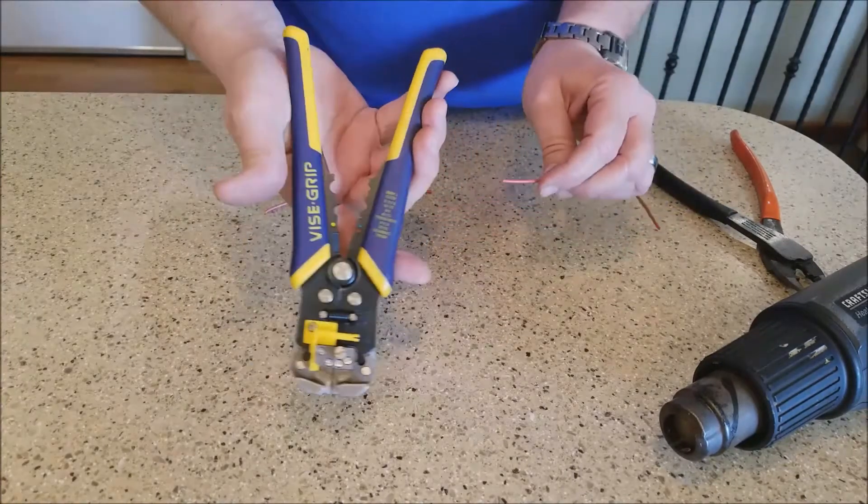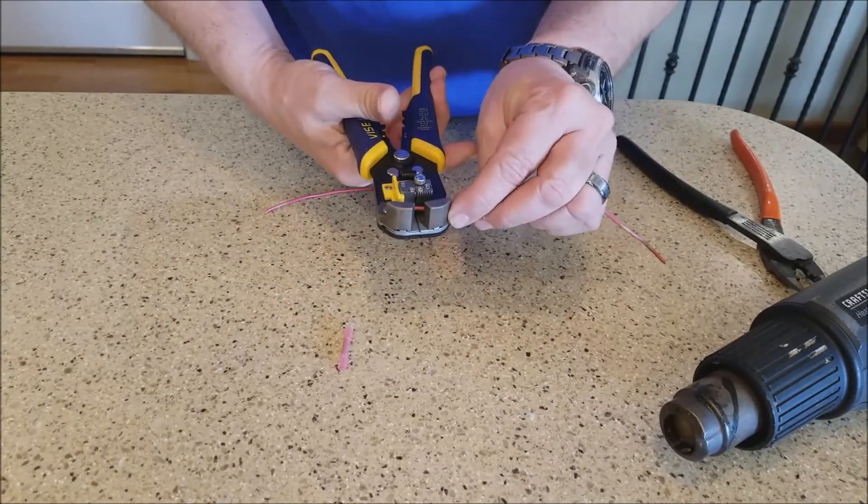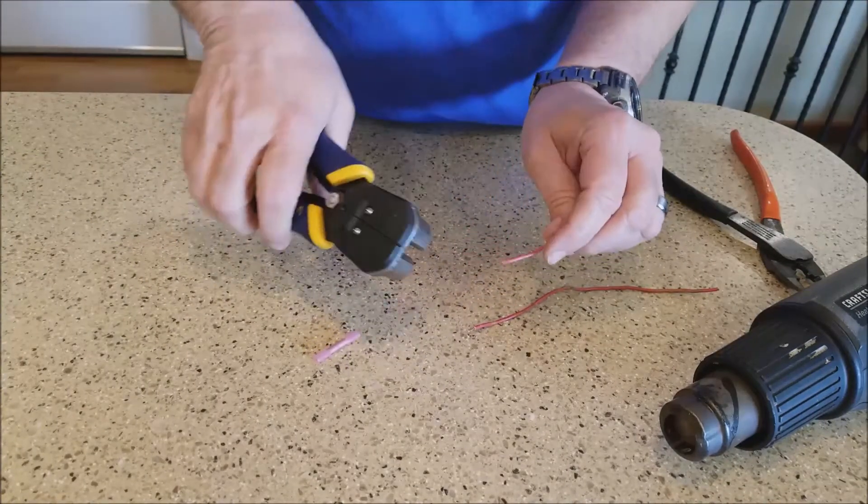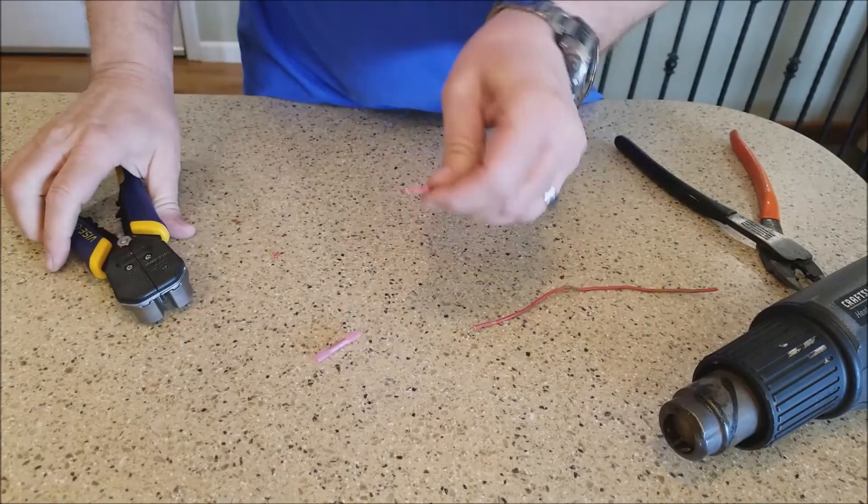What I do is, this happens to be a vise grip stripper. It's real handy if you're going to be doing a lot of stripping. You set it right in and pull the trigger, and do both sides about a quarter inch.